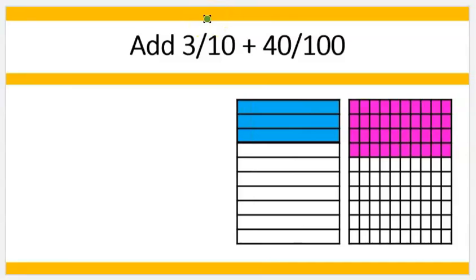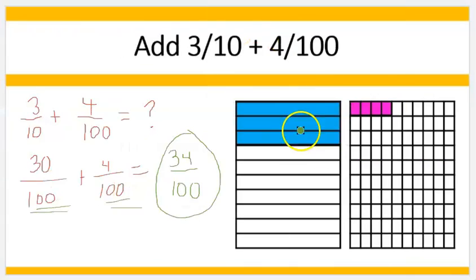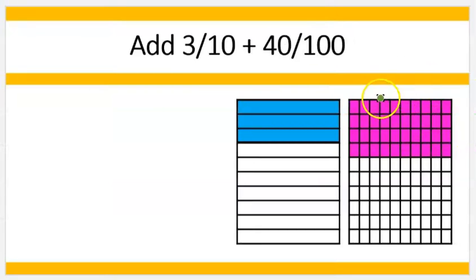In this problem, I have 3 tenths plus 41 hundredths. So in this problem, can I easily compare or convert my 41 hundredths to tenths? Yes, I can. See how it's different than this problem? In this problem, my 4 one hundredths didn't make a full tenth, but my 4 one hundredths make up full tenths.